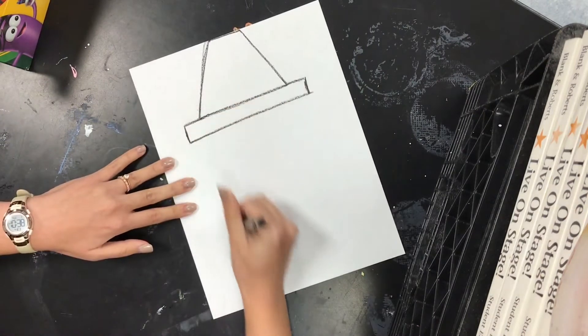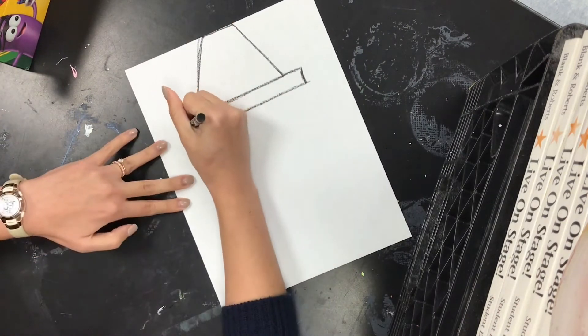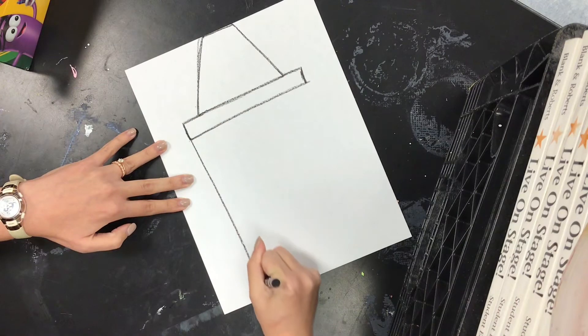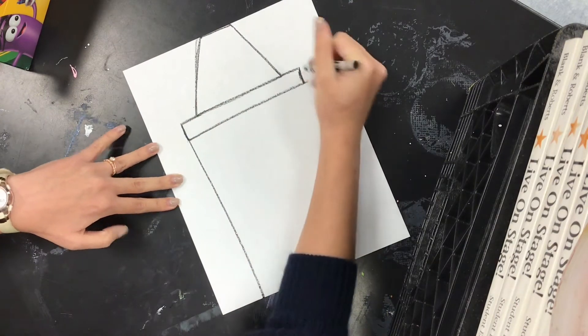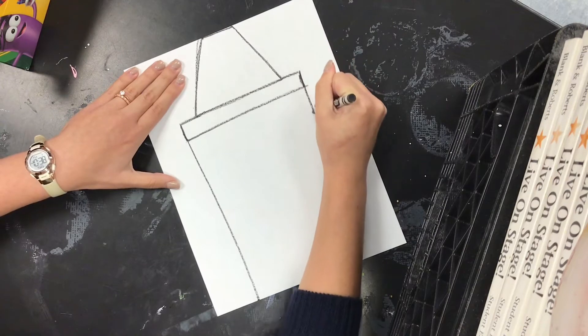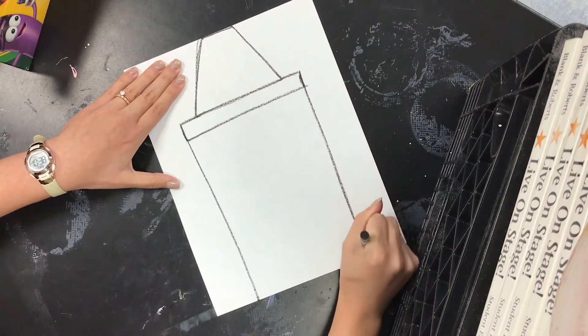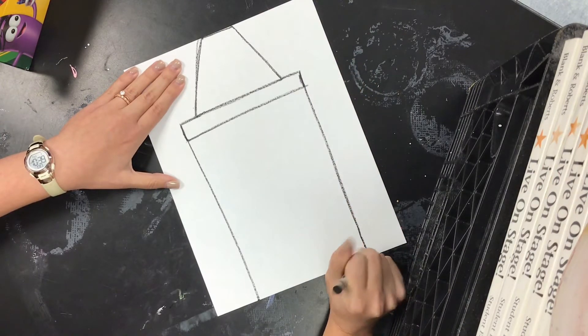Once you have that rectangle, we're going to draw one big, long, straight line all the way down to the bottom on each side. This is going to be the body of our crayon.